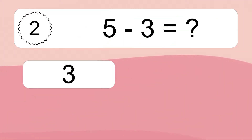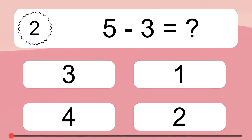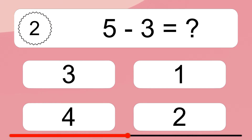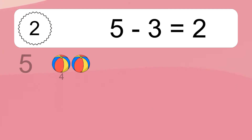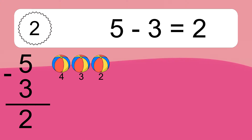5 minus 3 equals what? 5 minus 3 equals 2. Let's count it: 4, 3, 2.